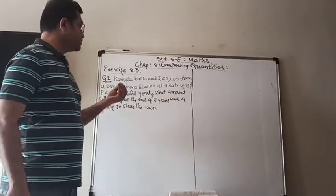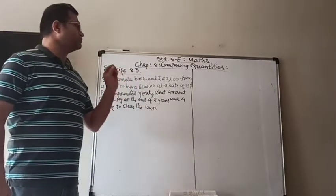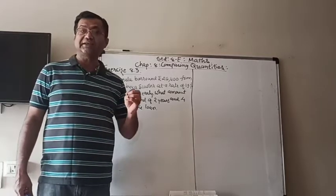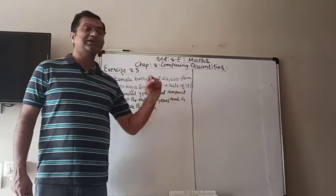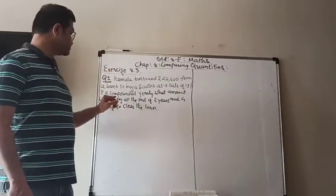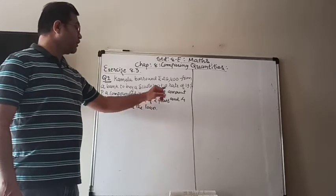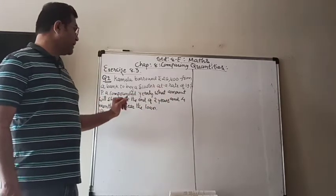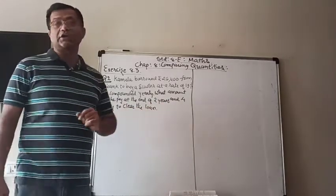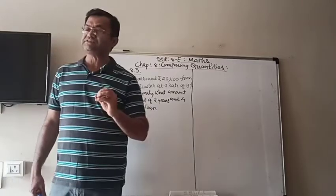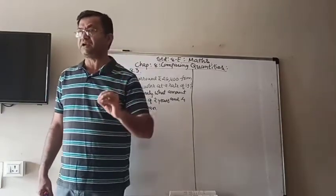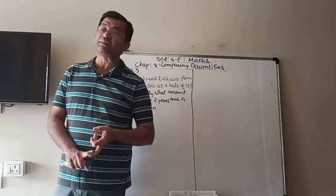Kamala borrowed Rs. 26,400 from a bank to buy a scooter at a rate of 15% per annum, meaning annually, compounded yearly. What amount will she pay at the end of 2 years and 4 months to clear the loan? Here you can see that the time period is 2 years and 4 months.